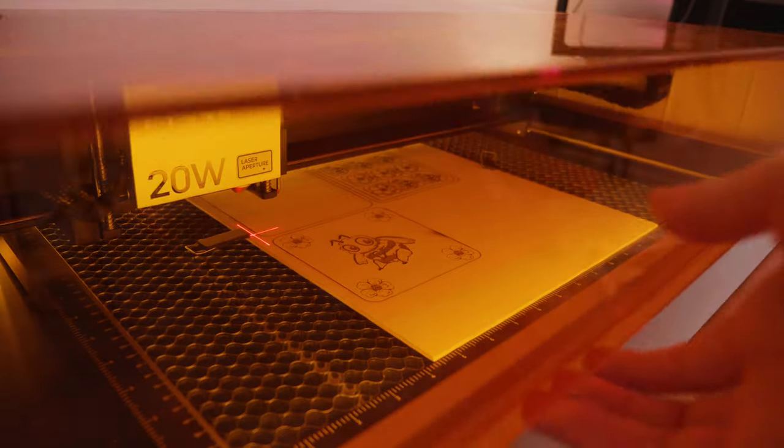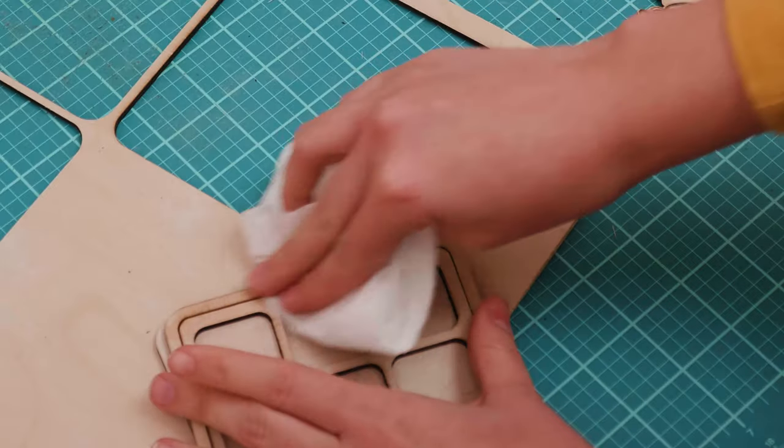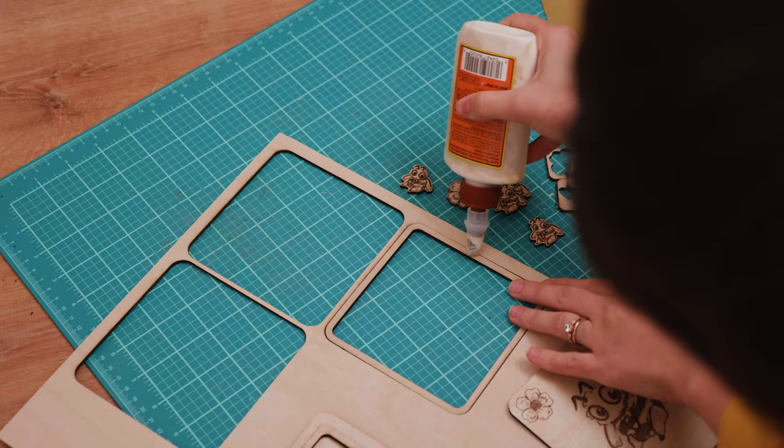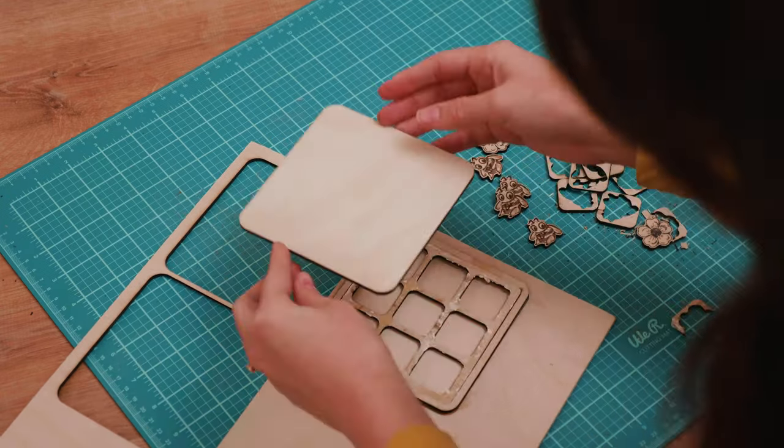A trick I used here to get some of the scorch marks off from the laser was rubbing isopropyl alcohol on the wood and letting it dry. To put everything together, I just used some old wood glue that I had laying around, and then I also decided to go ahead and paint the pieces just a little bit with acrylic paint.